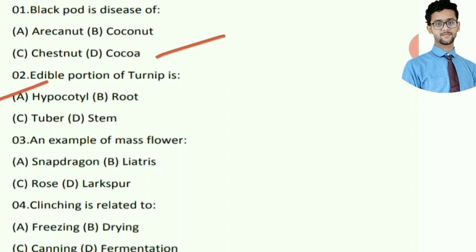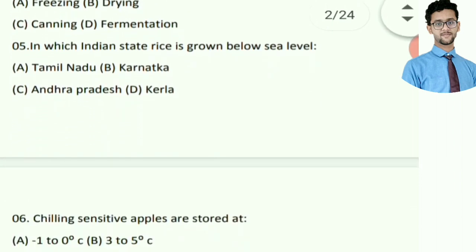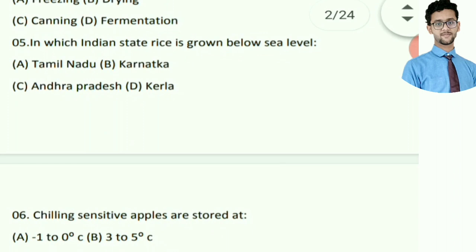An example of a mass flower — answer is rose. Next, clinching is related to — answer is canning.